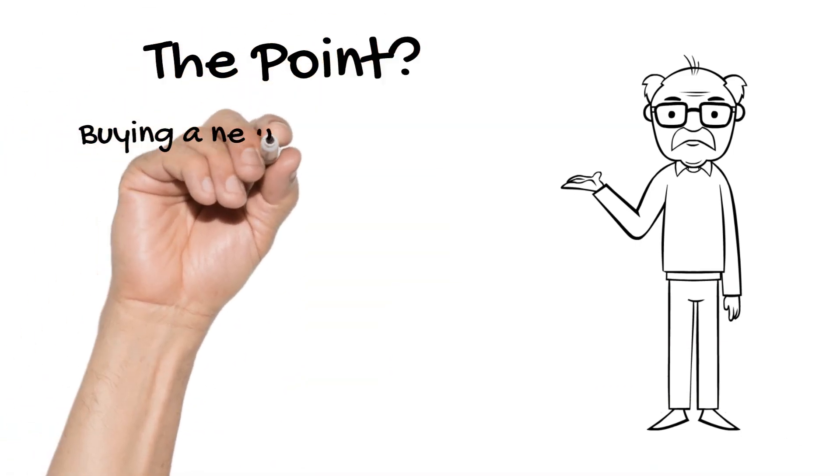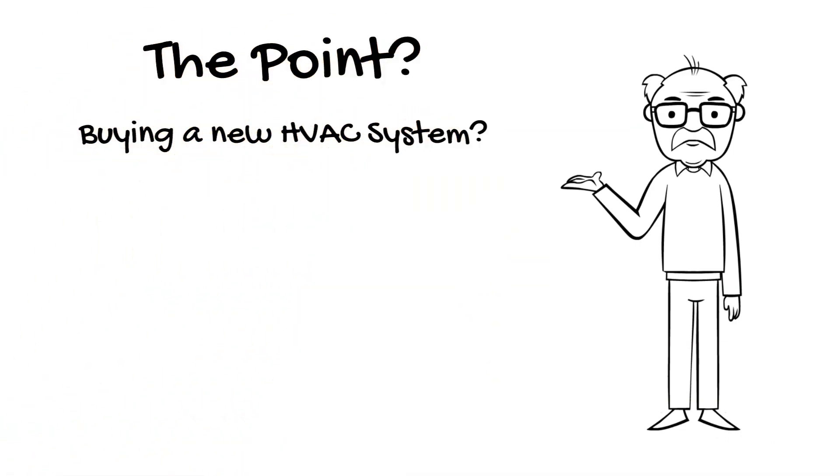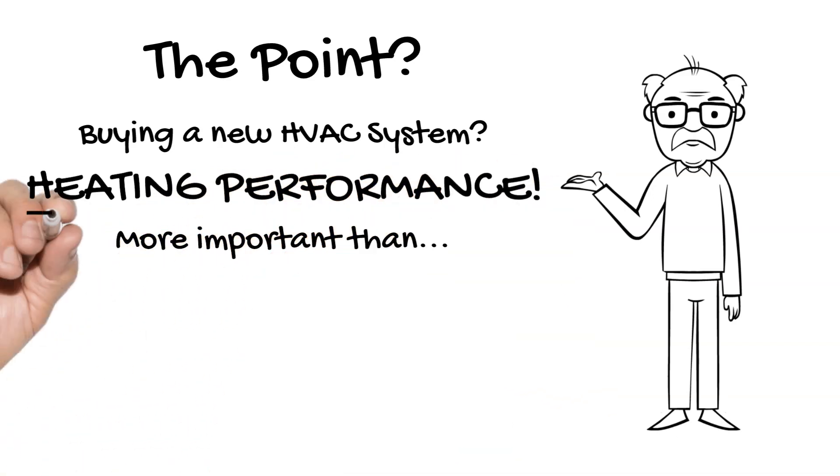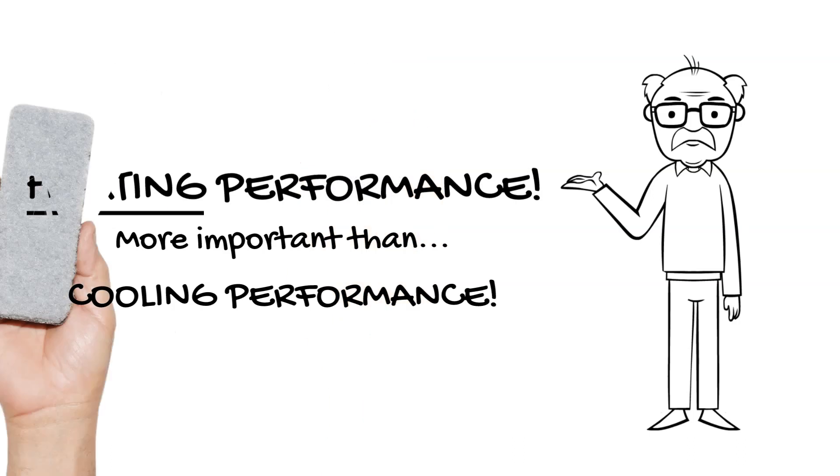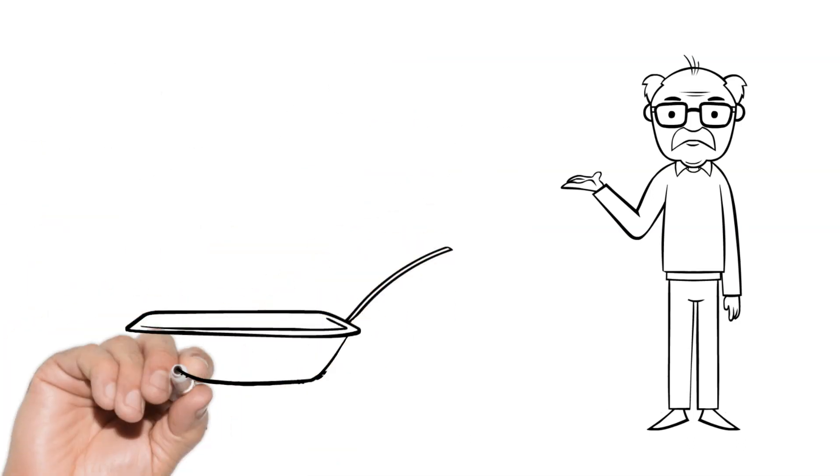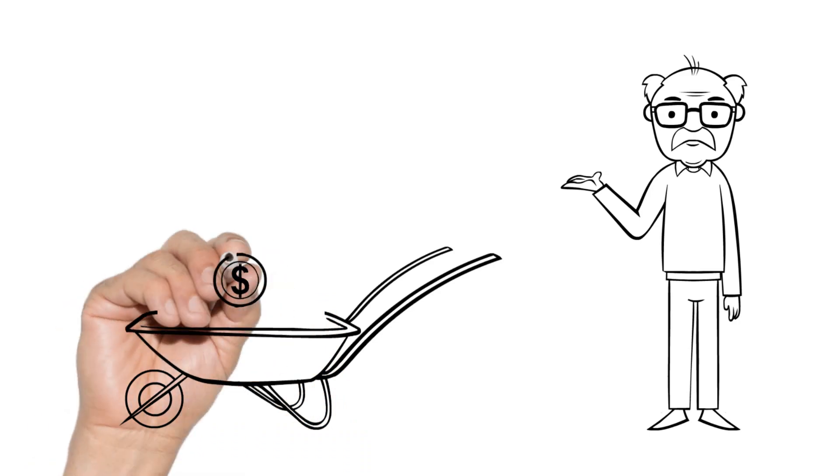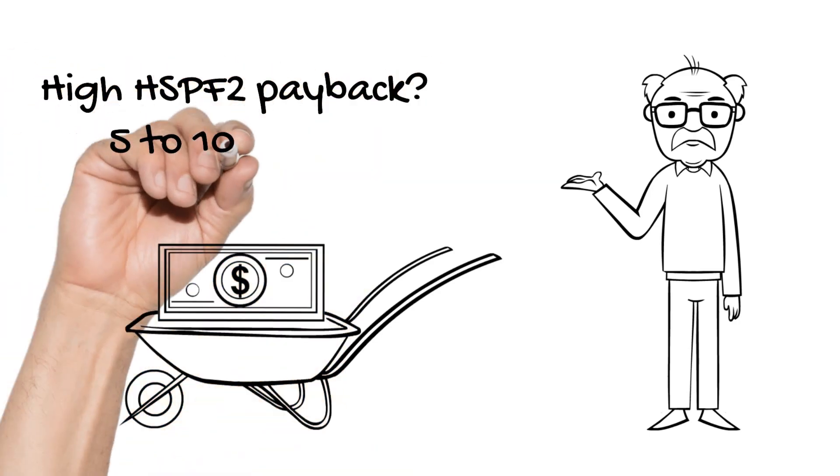The point is this. When buying a new HVAC system for your home, consider the heating performance as more important than the cooling performance. Getting the most efficient heat pump rather than the minimum efficient model will likely pay back the difference in 5 to 10 years.